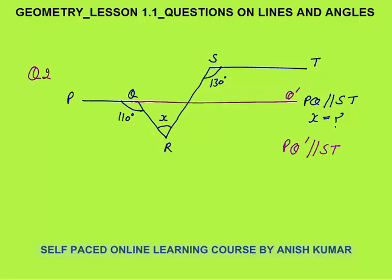Now, what will this angle be? These two are parallel lines — let me name this point SU. We know that ST and UQ' are parallel lines and SU is the transversal. So the sum of angles on the same side of the transversal will be 180. This angle is 50, because when two parallel lines are cut by a transversal, co-interior angles sum to 180.